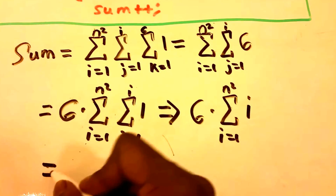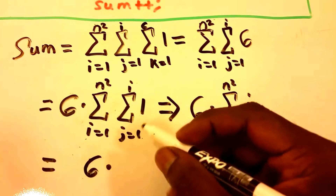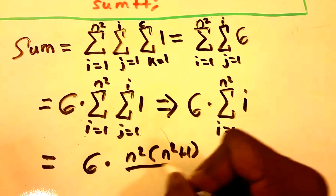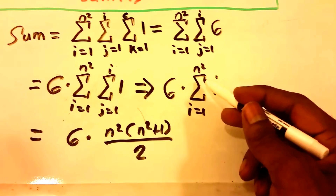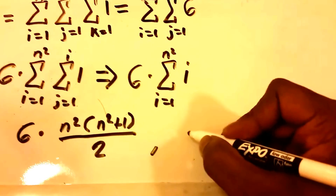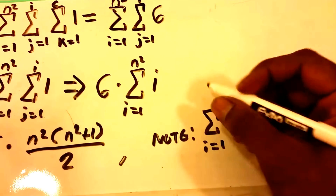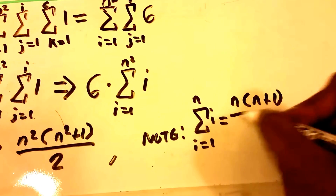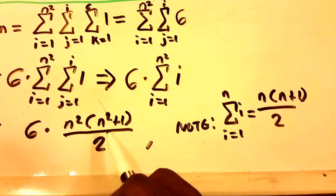Simplifying even more, we get 6 times n squared times (n squared plus 1) divided by 2. You may wonder how we know that summation equals that formula. There's another formula: the summation from i equals 1 to n of i equals n times (n plus 1) divided by 2. All we had to do was substitute that n for our n squared, and that's how we get this formula.